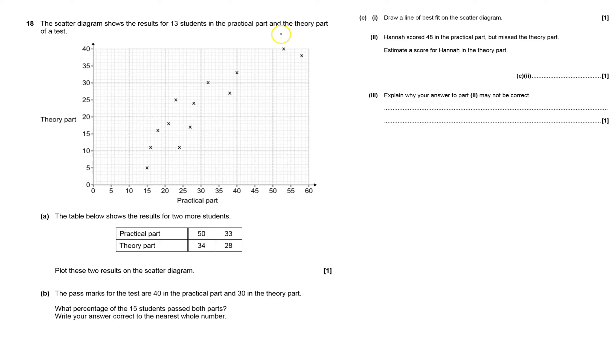Okay, we've got a scatter diagram for 13 students in a practical part and a theory part of a test. Table below, it's got two more students, so let's take it up to 15.